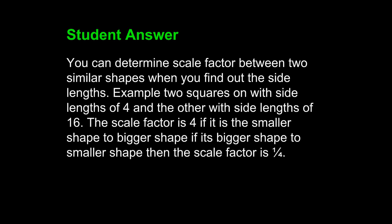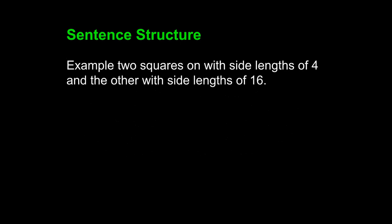Example: two squares, one with side lengths of 4 and the other with side lengths of 16. The scale factor is 4 if it is the smaller shape to bigger shape. If it's bigger shape to smaller shape, then the scale factor is 1 to 4. Once again, this writing is flawed.